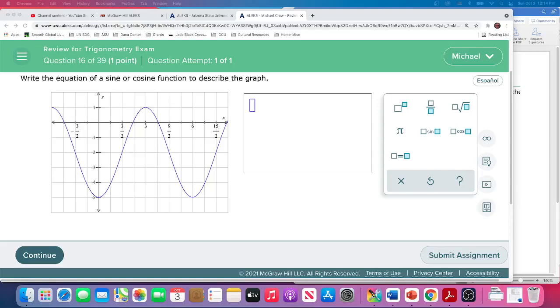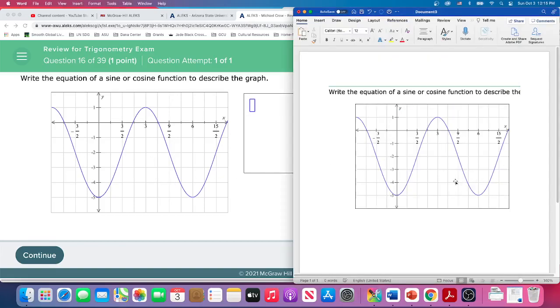Question 16, now this is going to be a little bit difficult. They want sine or cosine, so we have to choose that. They don't give us the format, so it's all up to us. But this is going to be one that involves both the amplitude, the period, the potential phase shift, and as well as a vertical shift.